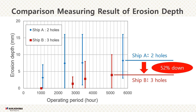I'd like to show a comparison of erosion conditions on the propellers of both ships in terms of erosion depth. This figure shows the maximum and minimum erosion depth of all propeller blades on both surfaces at each measurement period. After about 5,000 hours in operation, the average erosion depth of ship B was reduced by 52% compared to ship A. Judging from the trend of erosion depth progress, it is expected that the erosion progress rate will continue to slow down in the future. Therefore, drilling three anti-cavitation holes is also more effective in suppressing erosion depth progress than two holes.